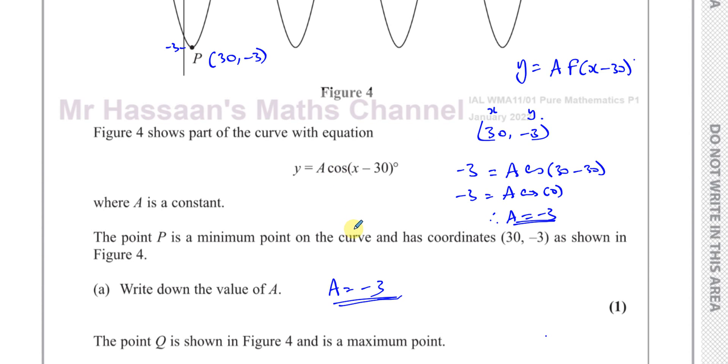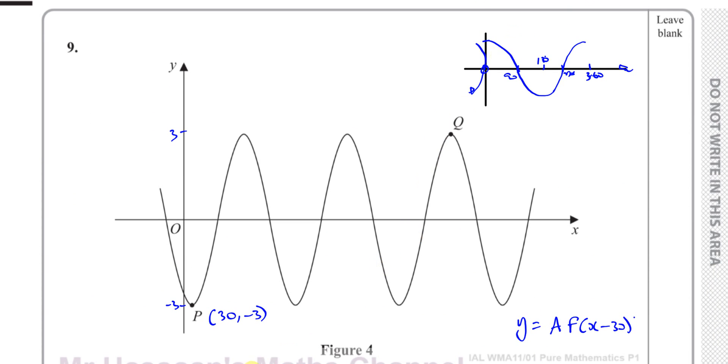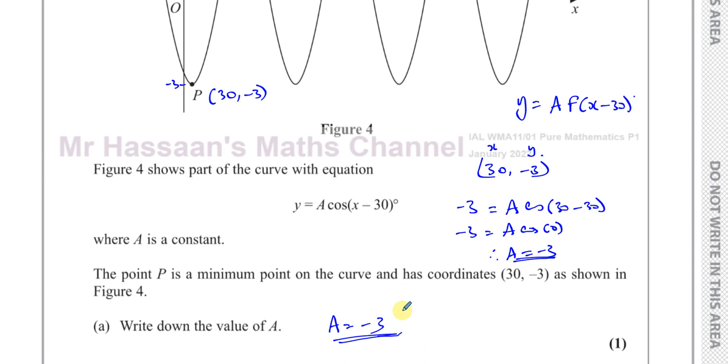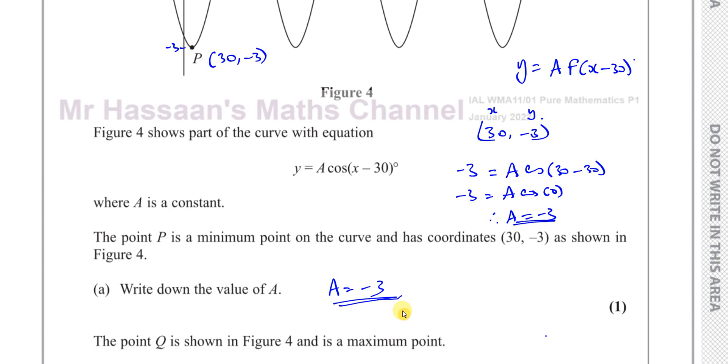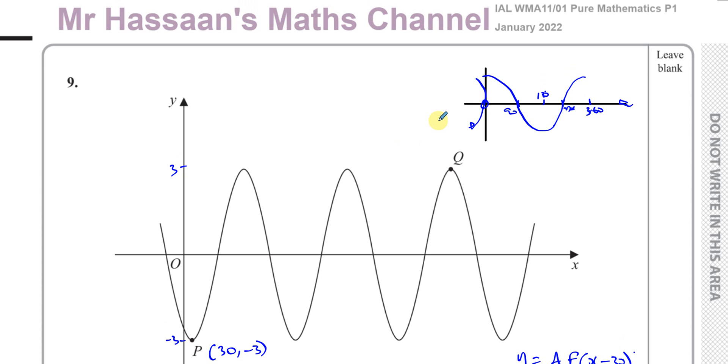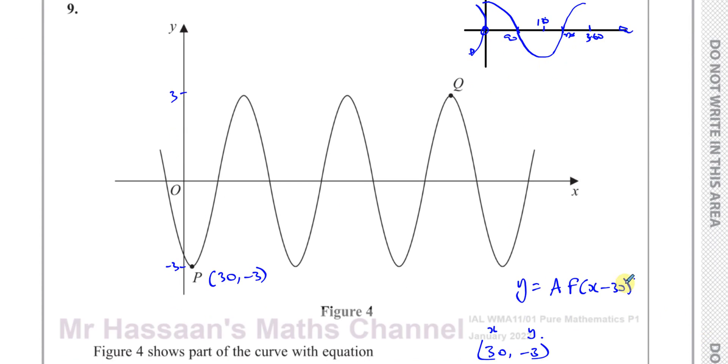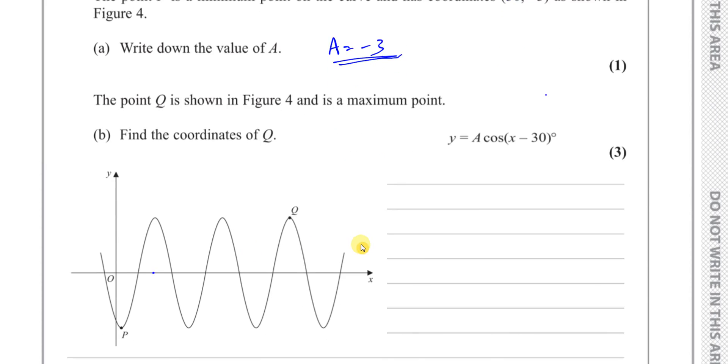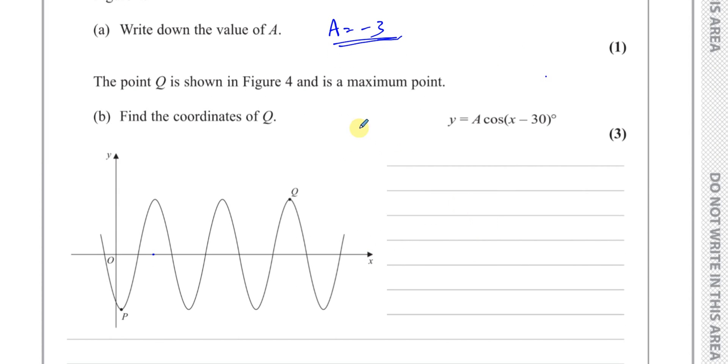And as we know the cosine curve at 0, it's at 1. So therefore, we can say a is equal to negative 3. So you can also work this out using the equation algebraically. You can work it out thinking about the transformation of the curve, which is important. And we can think about it also using algebra by just substituting x and y values into there and finding what a is. In either case, a is negative 3. Then it says the point Q, as shown in figure 4, is shown in figure 4, which is over here, and is a maximum point. Find the coordinates of Q.